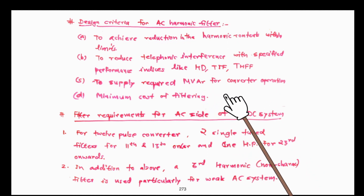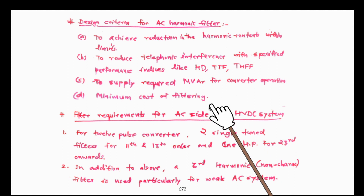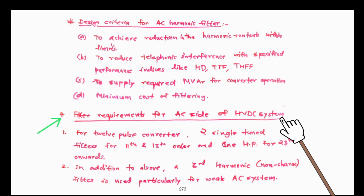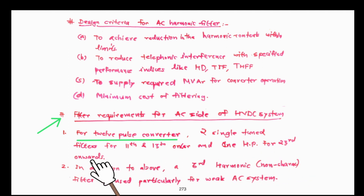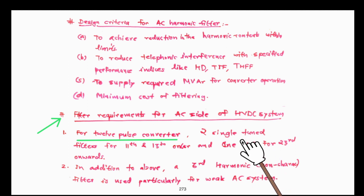Having established the criteria for filter design, we must now determine how many filters are to be designed in order to effectively minimize harmonics. The filter requirements on the AC side of an HVDC system for 12-pulse converter operation: it is recommended that two single-tuned filters for the 11th and 13th order harmonics and one high-pass filter for 23rd harmonics onwards be used to eliminate all harmonics in the AC current.